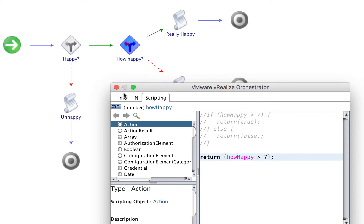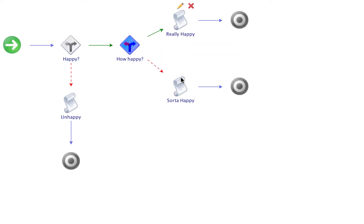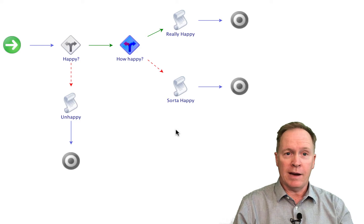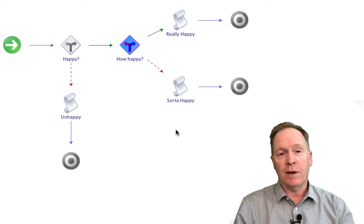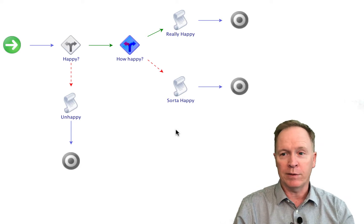The rest of this works essentially the same way that you've seen the basic decision work. With a custom decision, when you drag one in, you get a green path and a red path, and you can add schema elements such as scriptable tasks or whatever you want on either branch coming out of your custom decision. In summary, basic decision allows you to have one variable that you're testing and you do not get to define the code. On the other hand, with the custom decision, you can bring in as many input parameters and attributes as you want, and you can define the JavaScript code however you see fit.